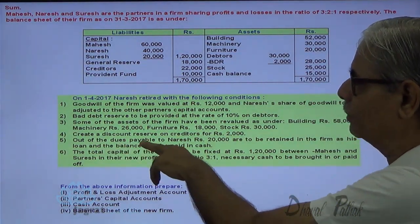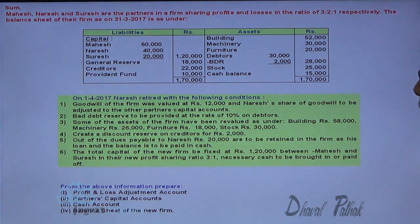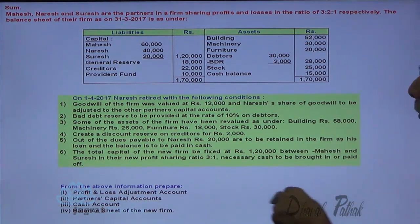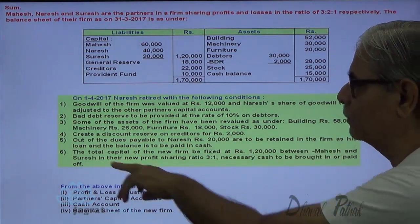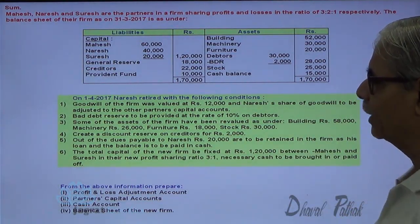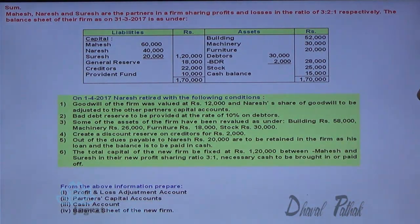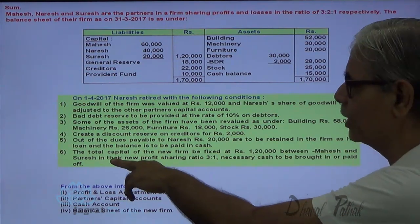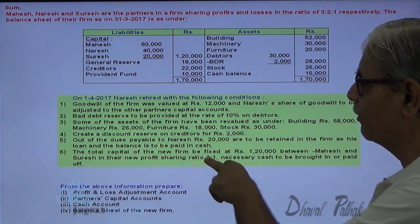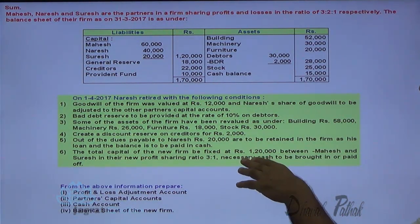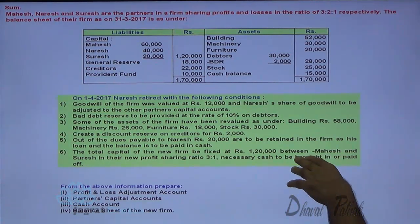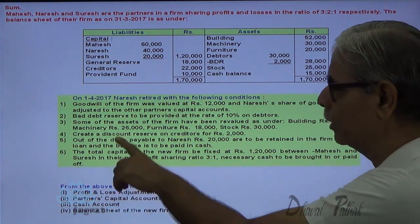Out of the dues payable to Naresh, 20,000 are to be retained in the firm as loan and the balance is to be paid to the retiring partner. Total capital of the new firm is fixed at 1,20,000 between Mahesh and Suresh in the new profit sharing ratio of 3 to 1, and necessary cash is to be brought in and paid off.